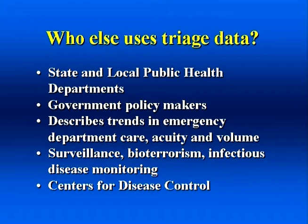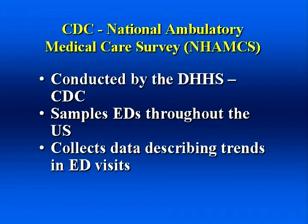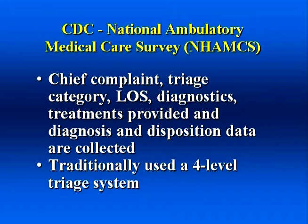The Centers for Disease Control are primarily responsible for monitoring trends in emergency department care. The CDC conducts the National Hospital Ambulatory Medical Care Survey, also called NHAMCS. This survey is conducted every year by the Department of Health and Human Services, the CDC, and the National Center for Health Statistics. Emergency departments across the United States are sampled. Surveyors abstract many different data points from your emergency department records, including demographics, chief complaint, treatments, medications administered, as well as the triage acuity rating. Historically, the CDC has used a four-level triage system to categorize emergency department visit acuity.